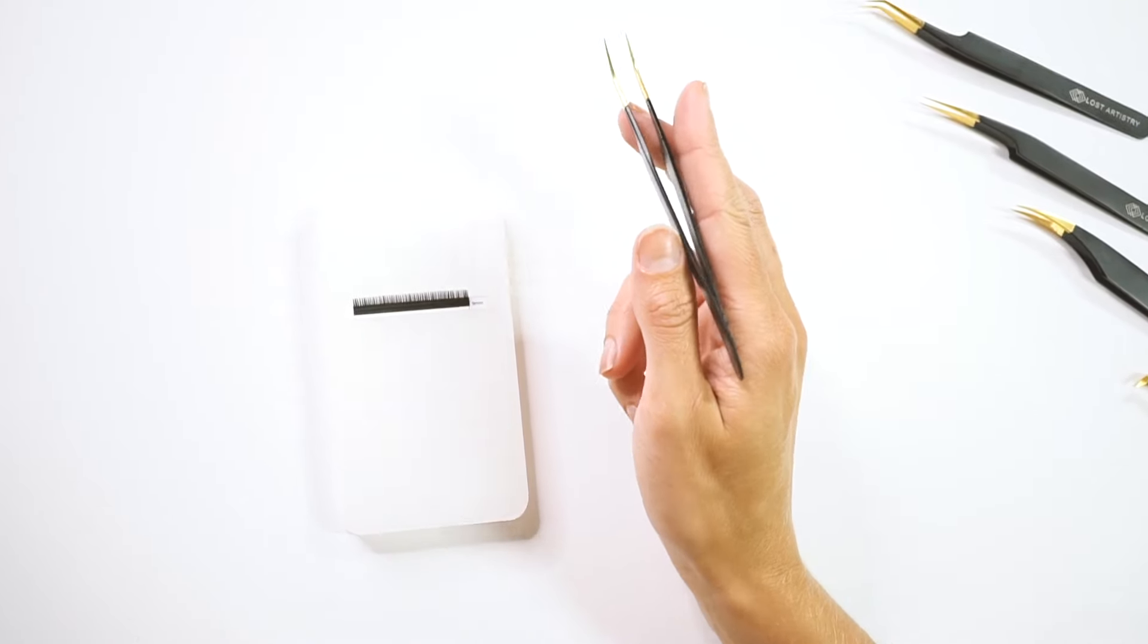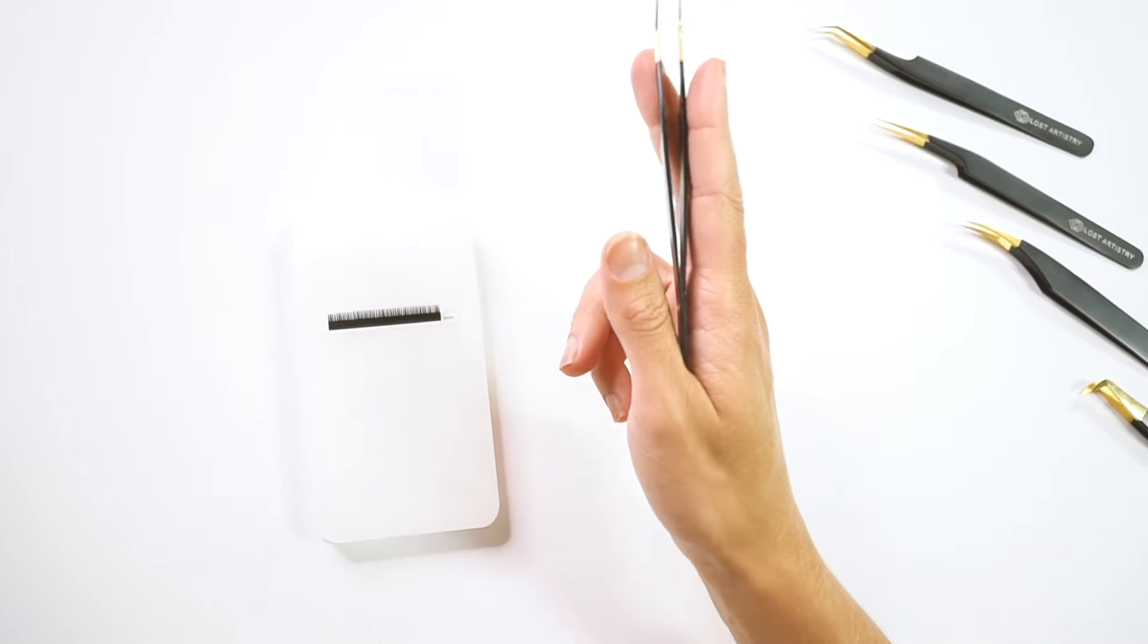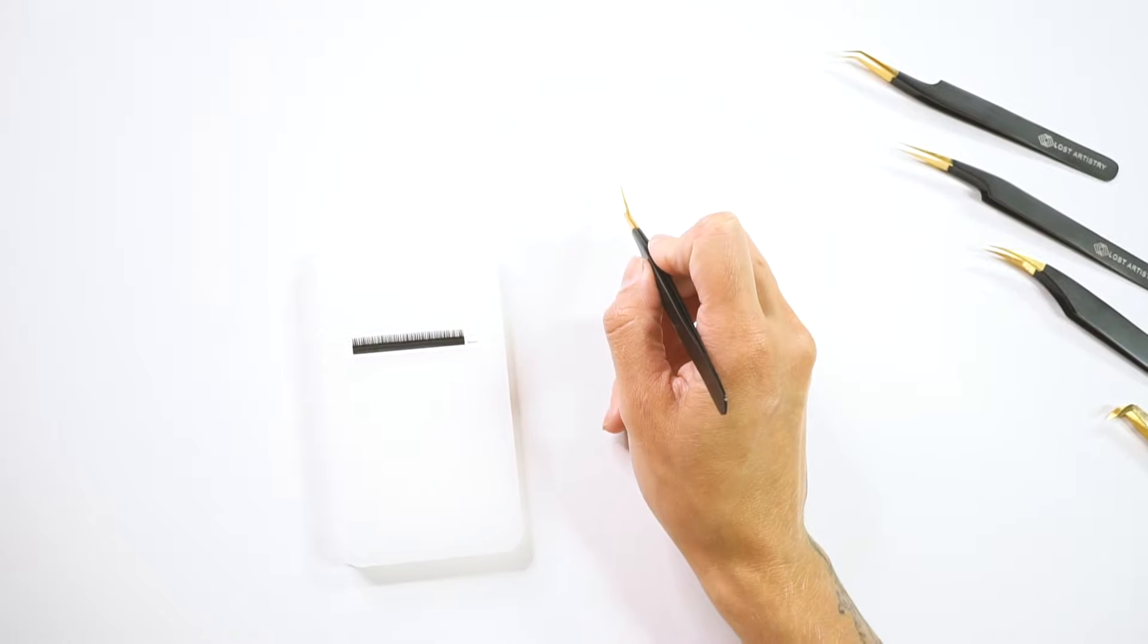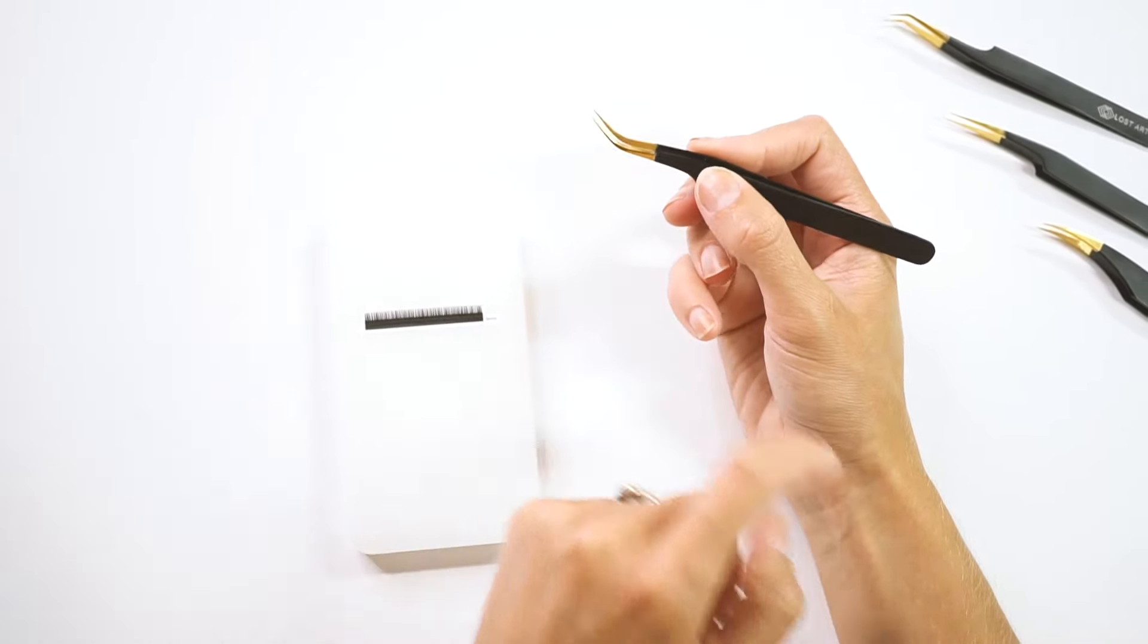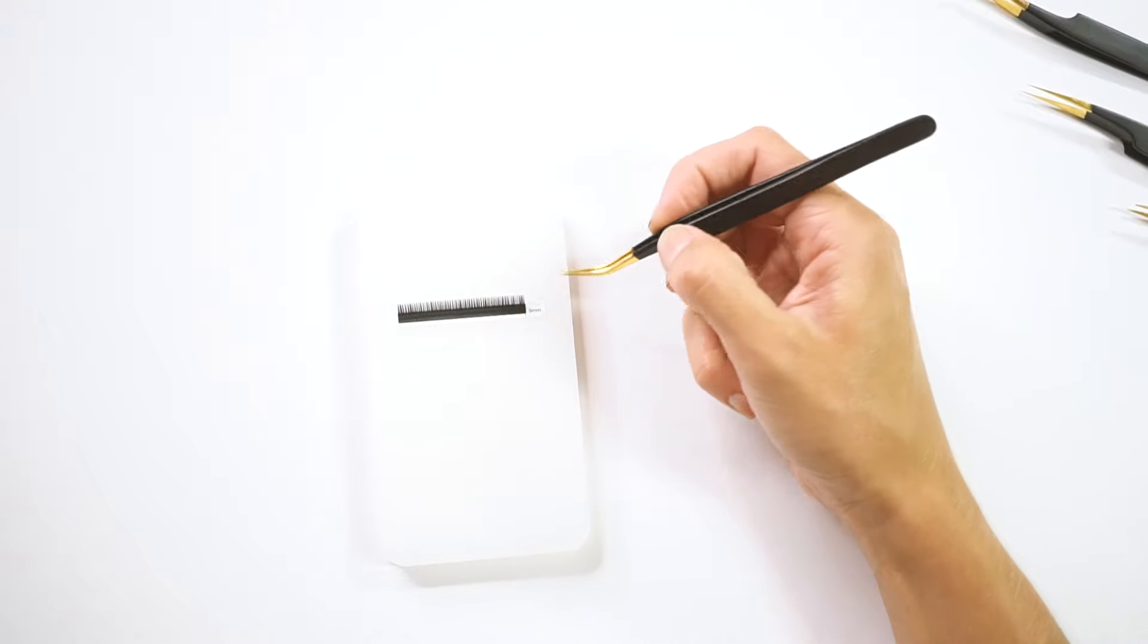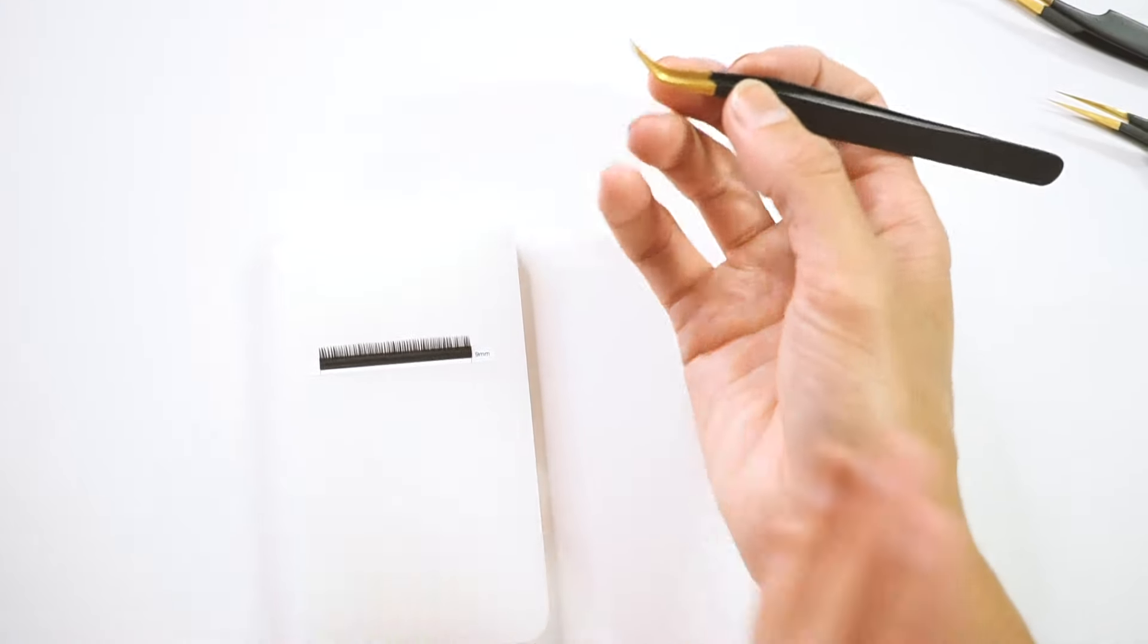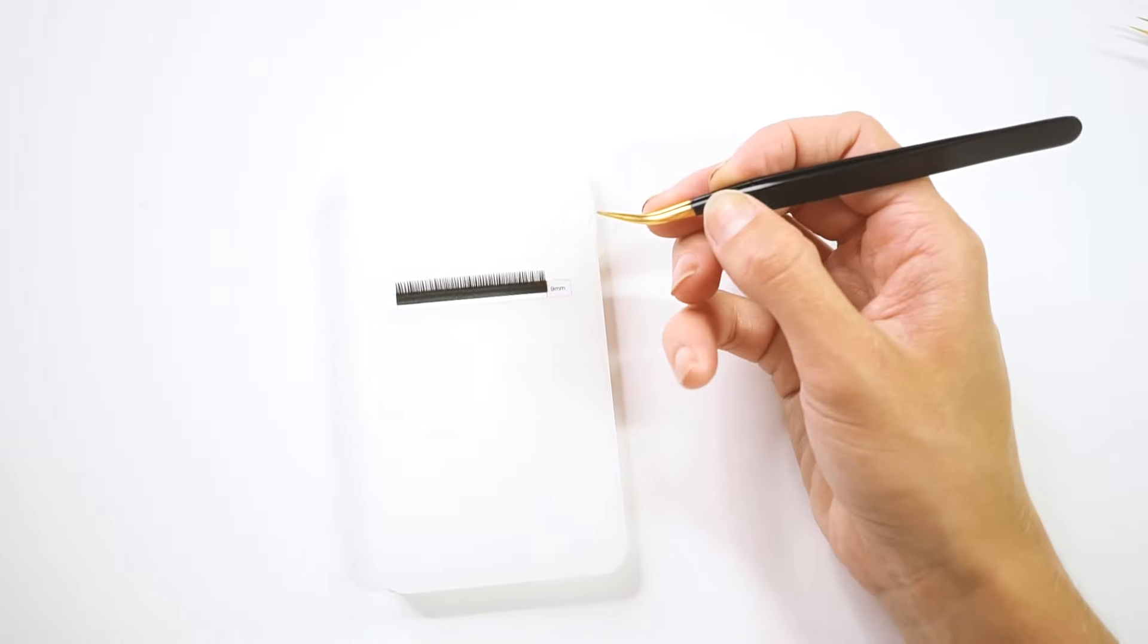So when holding our crane tweezer, it's much the same as holding our isolation tweezer. Like this. However, when we come in to pick up, we're going to come in from a side angle. And the tips of our tweezer are actually pointed up when you're picking up a lash. So that's a little bit different also. We're going to come in from a side angle, using our sides of our hands for support and stability, and grip our lash.